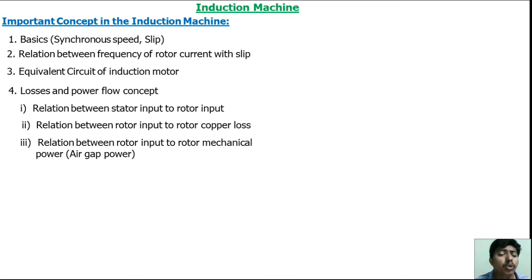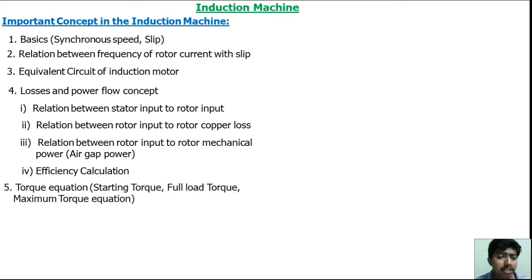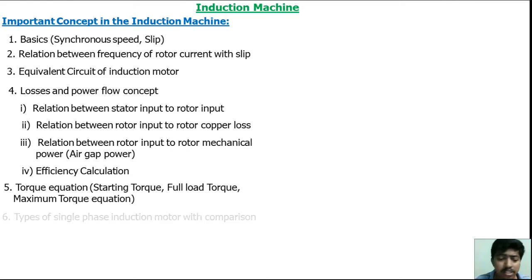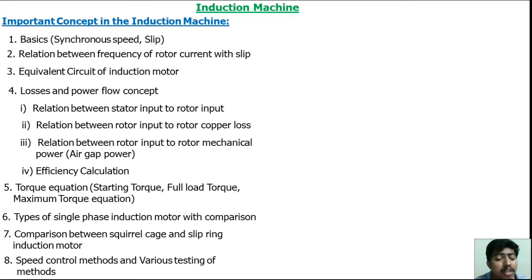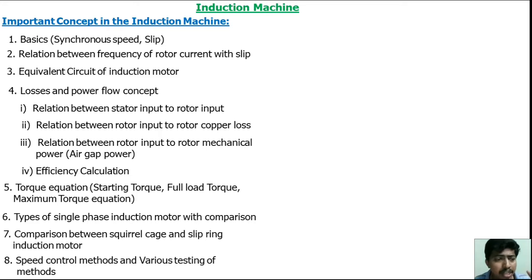The fourth relation is the rotor input to rotor mechanical power (air gap power), and efficiency calculation. Fifth topic is the torque equation — maximum torque, full load torque, and starting torque. Sixth is types of single-phase induction motors. Seventh is the comparison between squirrel cage and slip ring induction motors. Finally, speed control methods and various testing methods. These eight topics are very important for the examination.